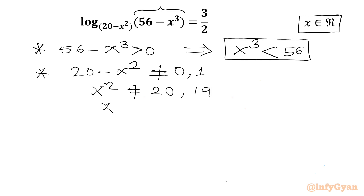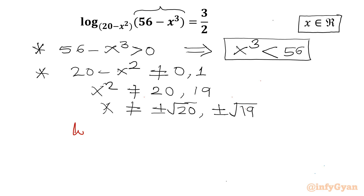So our answer should not be ±√20 or ±√19. Now I will use the log property which states that if log(a) base b equals c, then we can write a = b^c.